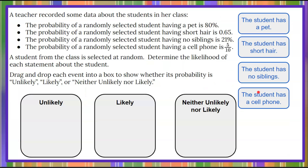Here's our question today. A teacher recorded some data about the students in her class. The probability of a randomly selected student having a pet is 80%. The probability of a randomly selected student having short hair is 65 hundredths. The probability of a randomly selected student having no siblings is 21%. The probability of a randomly selected student having a cell phone is 5 tenths. A student from the class is selected at random. Determine the likelihood of each statement about the student.